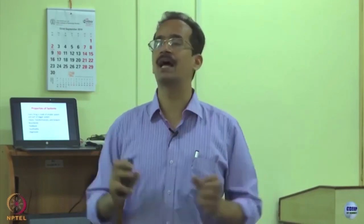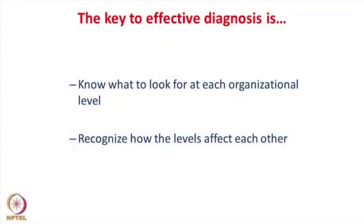A system is healthy when its components are aligned with each other. The key for effective diagnosis when using the systems perspective is that we need to know what to look for at each organizational level — organizational level, group or department level, and individual level — and we also need to recognize how these levels are affecting each other. These are three different systems within the organization, each with separate input, process, and output, and all three affect each other.